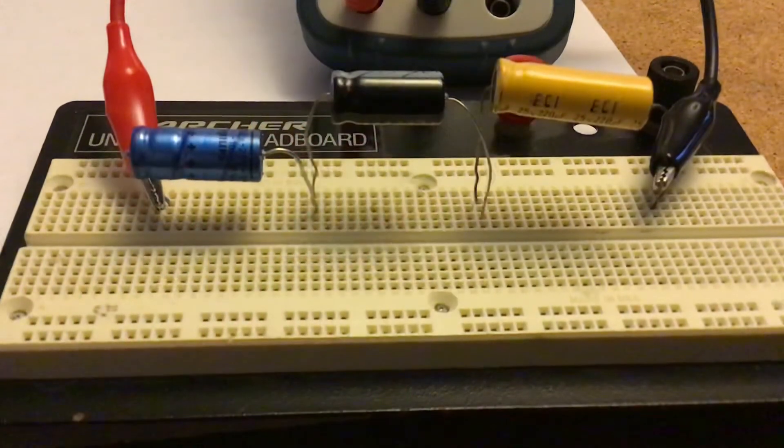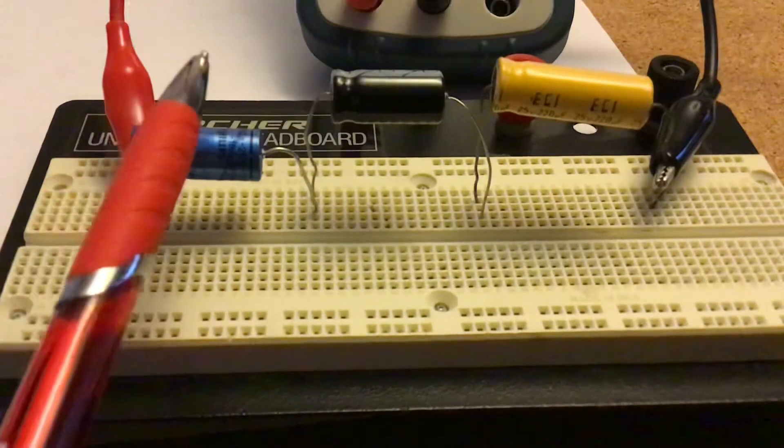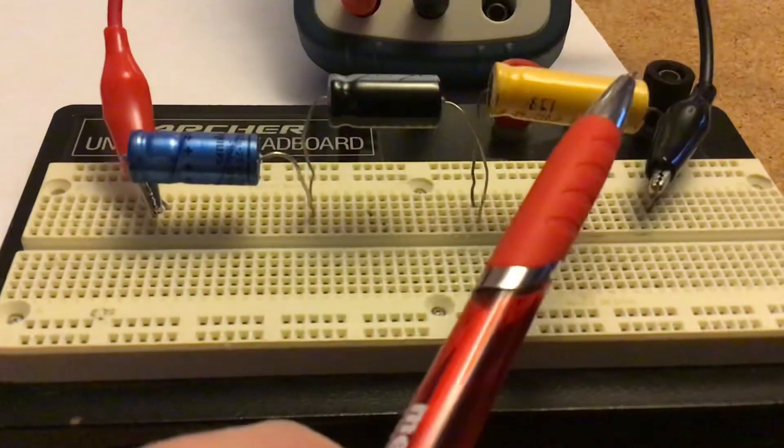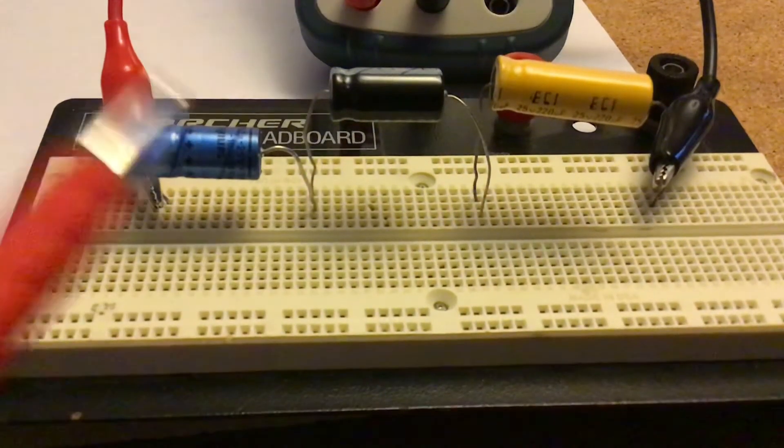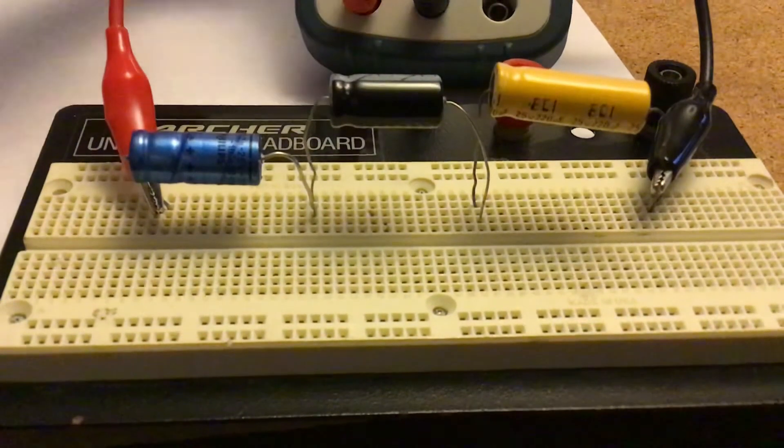That's going to be equal to one over the equivalent resistance of the circuit. So, once you find one over this, you add it to one over this, and then you add that to one over this. Then, you flip everything over to find the equivalent capacitance of the whole circuit. And it should be equal to the value we just wrote down.